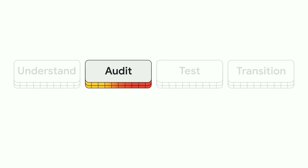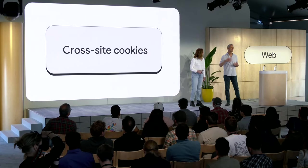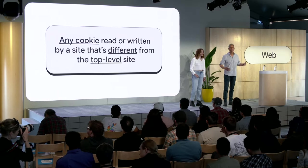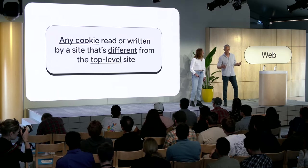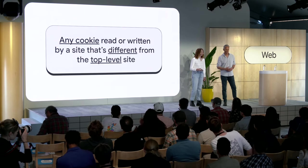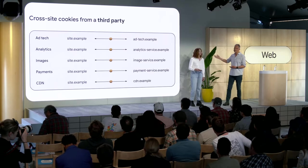What you need to do right now, if you haven't already, is audit cookie usage on your site — to understand where and when third-party cookies are being used and might cause breakage. One thing to clarify: when we talk about third-party cookies, we actually mean cross-site cookies — a cookie from any site that's different from the top-level site, the site shown in the URL bar. You can see from the examples that third-party cookies can be from a third party like an analytics service or ad tech.